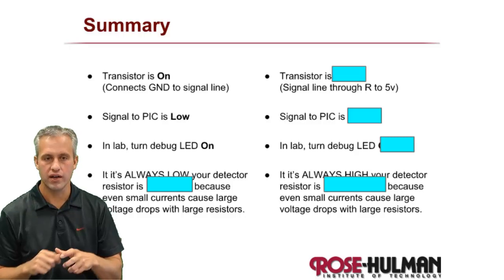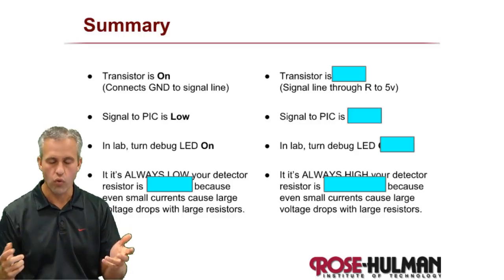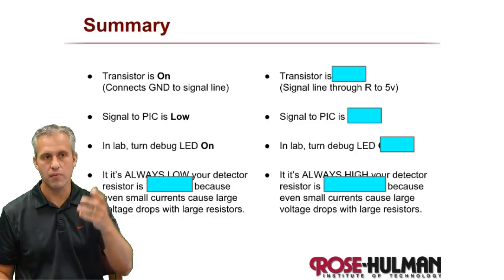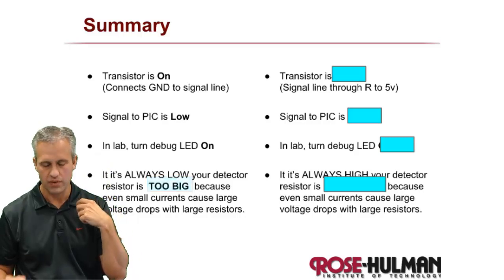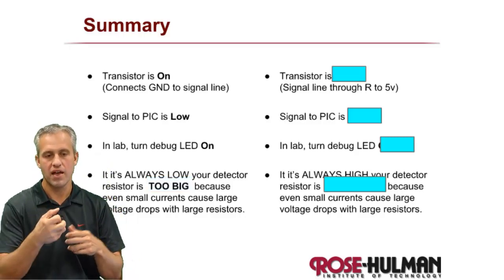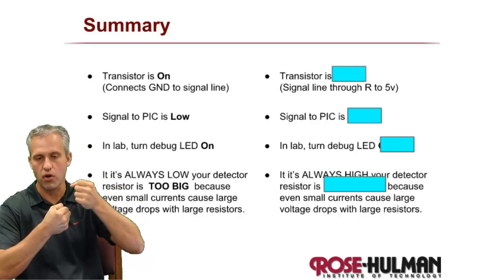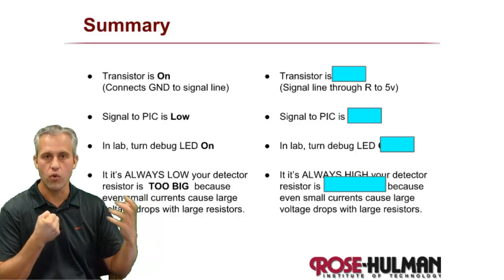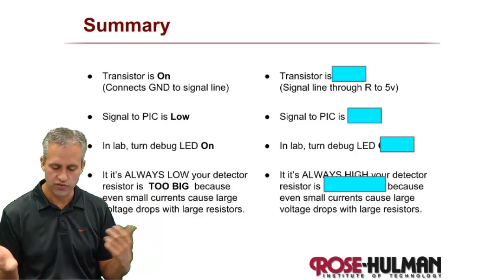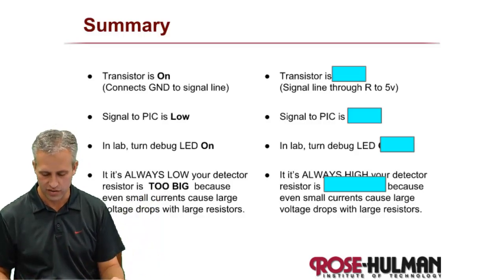If you run into the problem where no matter what, it's always on, then the problem is that your resistor is too big. And if it's always on, that means no matter how much current is flowing through here, even if it's a small number, the resistor is so big that it keeps the thing always on. And so you've got to make it lower if you get into that situation.